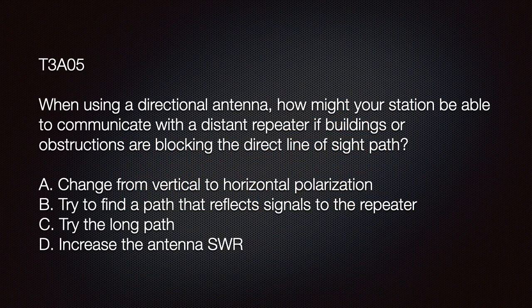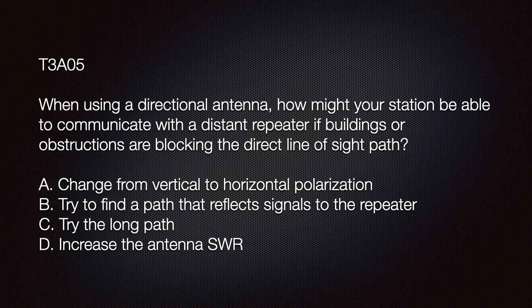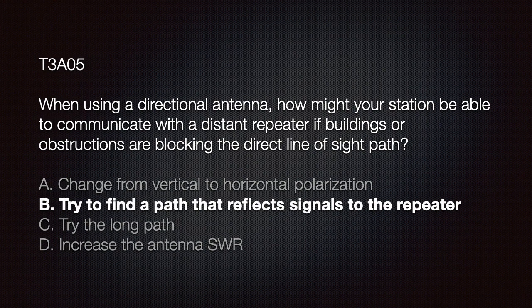The exam question: When using a directional antenna, how might your station communicate with a distant repeater if buildings or obstructions are blocking the direct line-of-sight path? Options: A — change from vertical to horizontal polarization; B — try to find a path that reflects signals to the repeater; C — try the long path; D — increase the antenna SWR. The correct answer is B: try to find a path that reflects signals to the repeater.